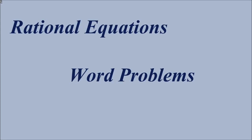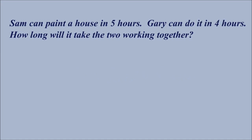In this video we're using rational equations to solve word problems about work. Here's an example: Sam can paint a house in five hours. Gary can do it in four hours. How long will it take the two working together?